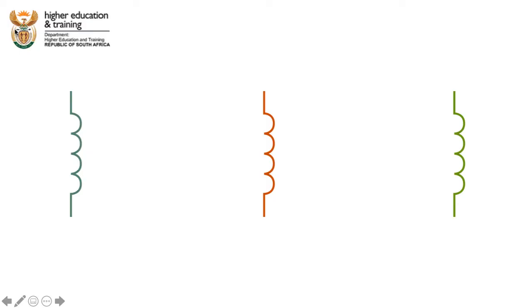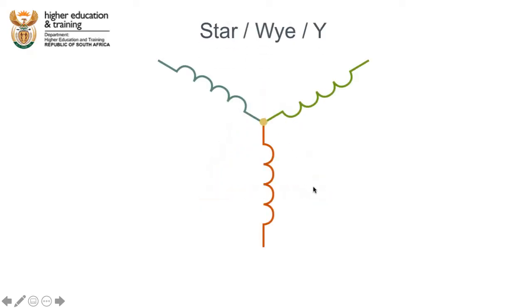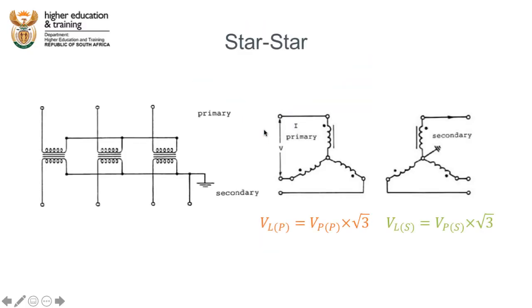We need to connect those coils together and we can connect them in one of two ways. The first way is a delta configuration — connecting the end of each coil to the beginning of the next coil. The second is a star configuration, where we connect all the coils together at a single connection point.